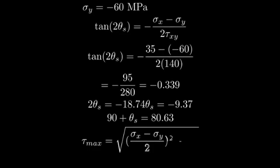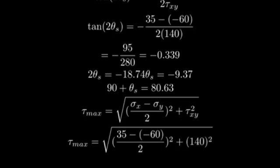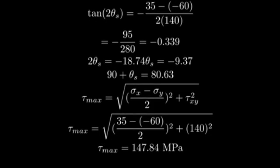Tau max equals the square root of sigma x minus sigma y over 2 squared plus tau xy squared. Plugging in our values, we get the square root of 35 minus negative 60 over 2 squared plus 140 squared. This simplifies to 147.84 MPa.